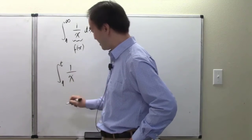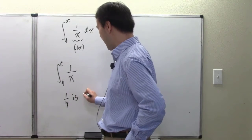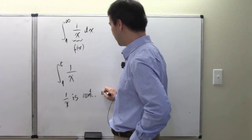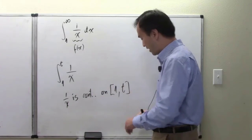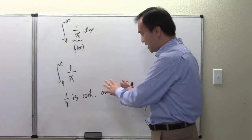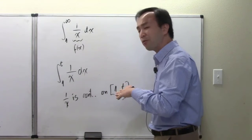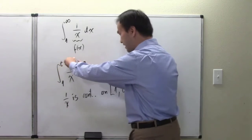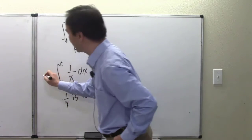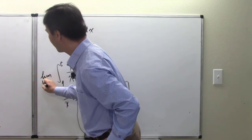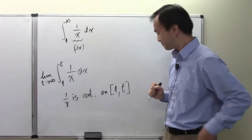The fundamental theorem of calculus says the anti-derivative of one over x is natural log of absolute value of x. After taking the anti-derivative, we evaluate it from one to t — substituting t and one. Then, at the final step, we take the limit as t goes to positive infinity.